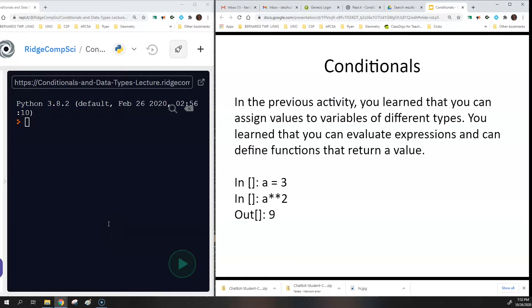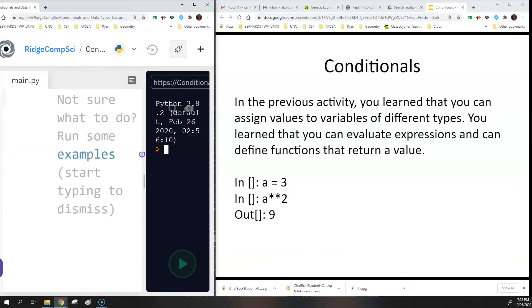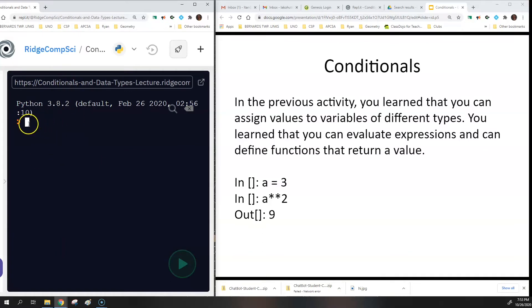In the previous activity, we learned that you can assign values to variables of different types. You've learned that you can evaluate expressions and define functions that return certain values. For example, I just have the terminal open here. This is REPL it, but I'm not showing you the code editor section because that would be where the functions go. So this is just the terminal, and I'm going to do some really quick calculations. If I did A is equal to 3, then that means that A is going to be stored with the value of 3 until I change it.